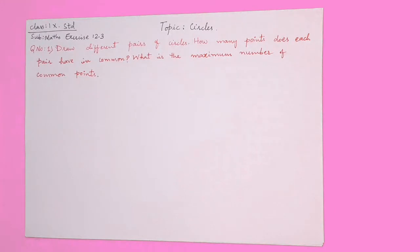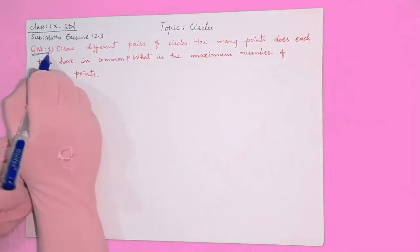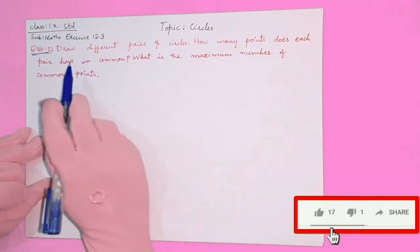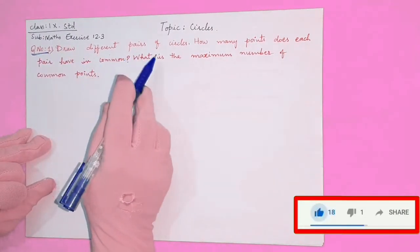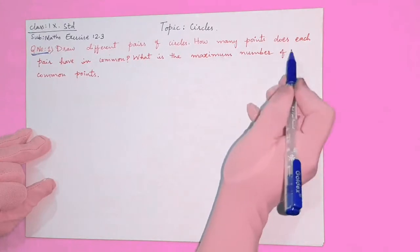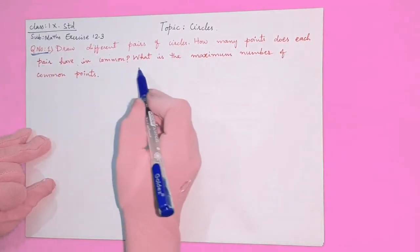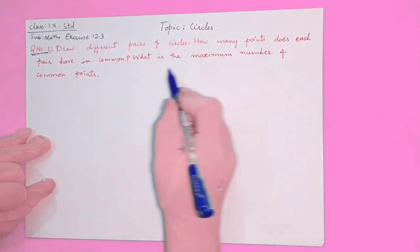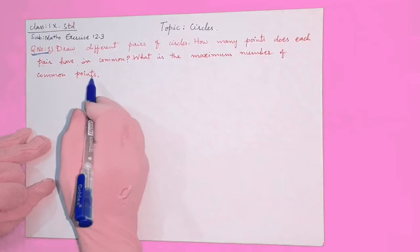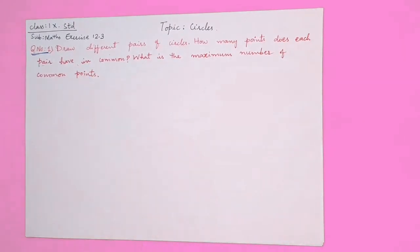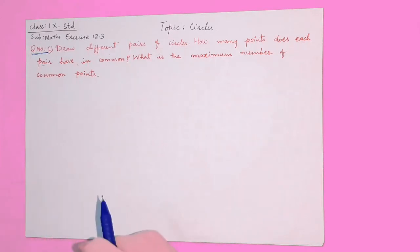Hello everyone. This is the Circles exercise 12.3, question number 1. The question asks: draw different pairs of circles, how many points does each pair have in common, and what is the maximum number of common points? If you are considering two circles, how many different cases can you draw?